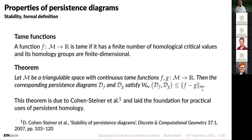The famous stability theorem states that for a triangular space with continuous tame functions f and g mapping to the real numbers, the corresponding persistence diagrams D_f and D_g satisfy that their bottleneck distance is less than or equal to the Hausdorff distance between the two functions. This means the bottleneck distance between persistence diagrams is bounded from above by the Hausdorff distance — so if your functions are close, the corresponding persistence diagrams are not infinitely far apart.